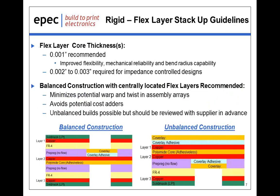Moving on into layer stack-ups, first and foremost is the thickness of the flex cores that are used. As a standard rule, the thinnest layers practically possible are recommended, as this improves the flexibility of the flex areas, which in turn improves the mechanical reliability and allows much tighter bend radiuses to be achieved reliably. In most cases, we recommend a one thou core. Impedance control designs will require thicker cores, typically in the two to three thou range depending upon the specific requirements.